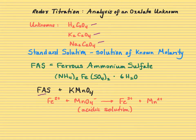So in FAS, the only thing we actually care about is the Fe2+ ion. And in KMnO4, the only thing we care about is the MnO4-. So the Fe2+ is going to turn into Fe3+, 2+ to 3+. The permanganate is going to turn into Mn2+, and this will happen in acidic solution.